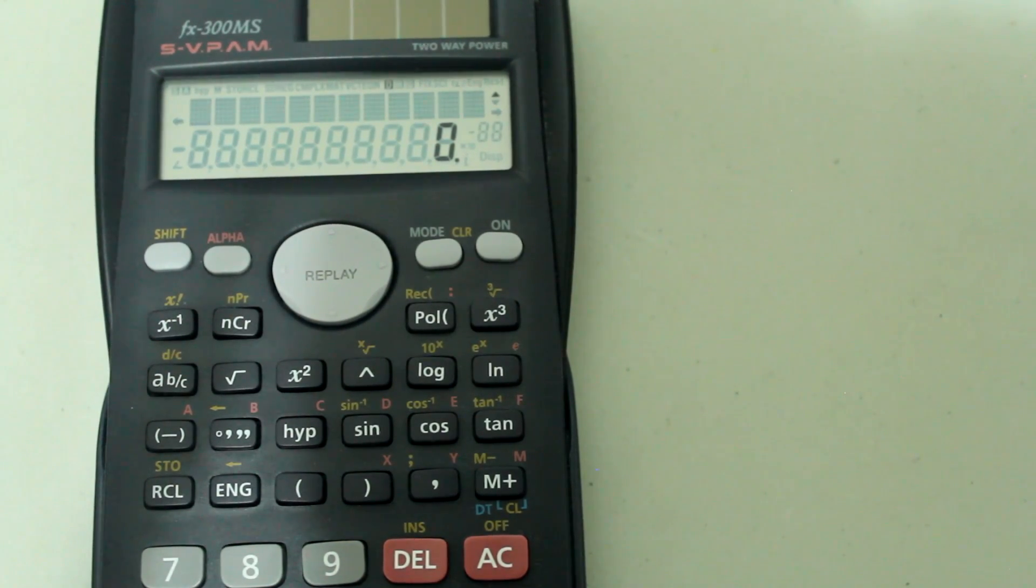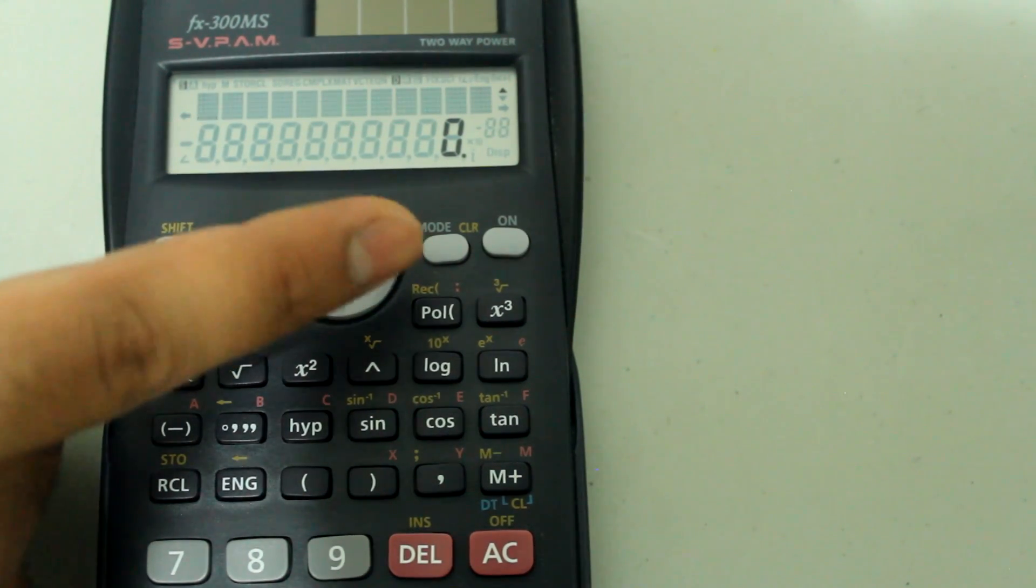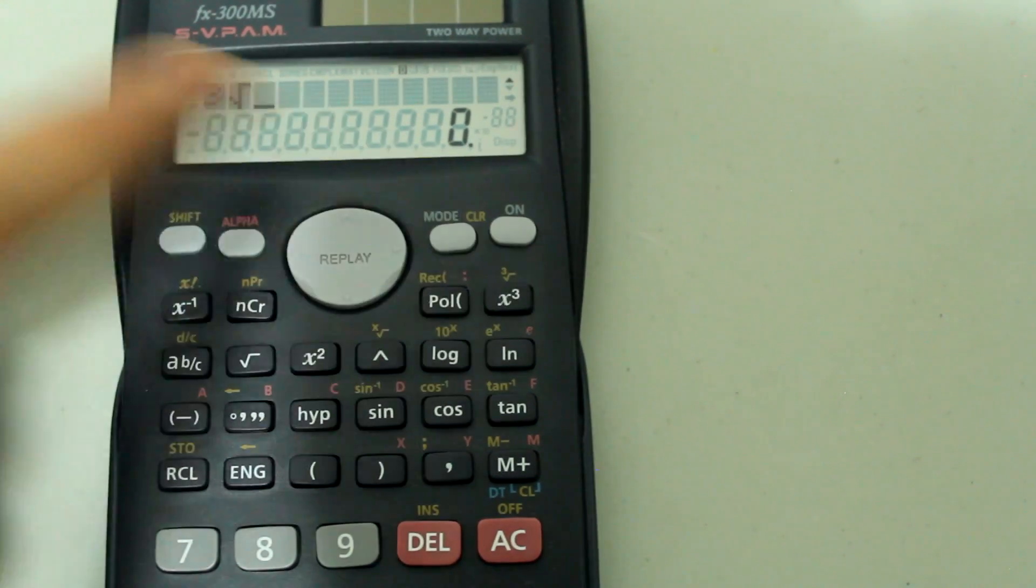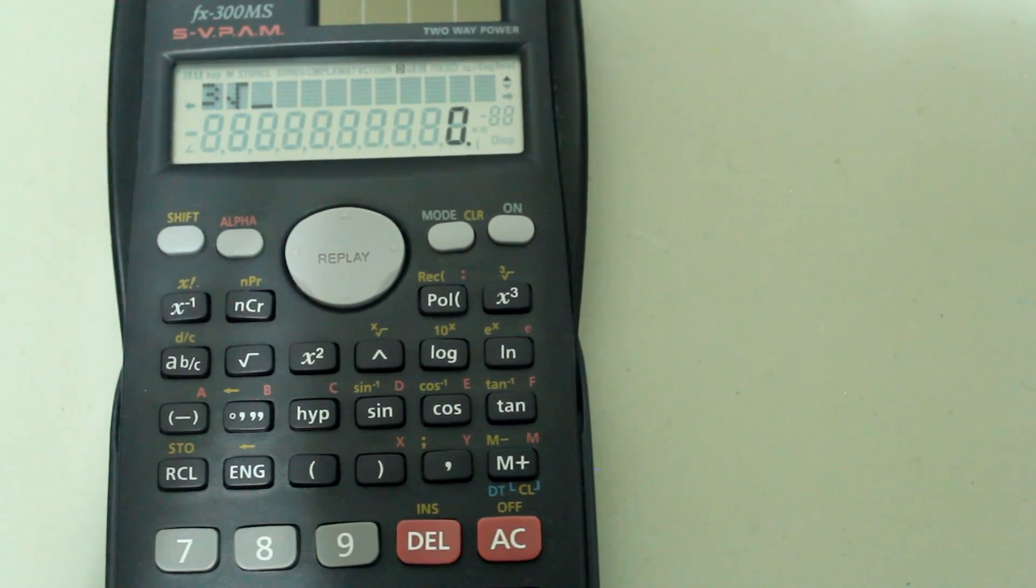In order to access any feature color-coded in yellow, press shift and press the button over which the yellow writing is located. So in this case press the X cubed button and you see that the cube root symbol appears on the screen.